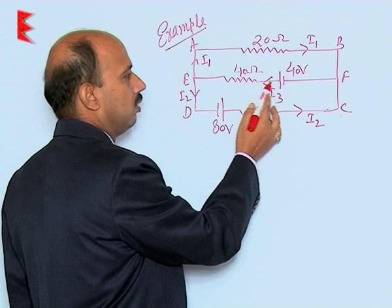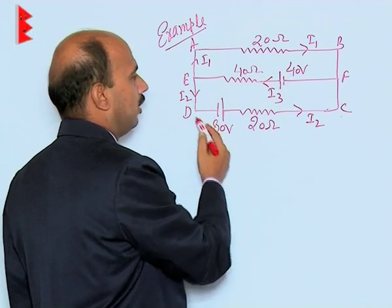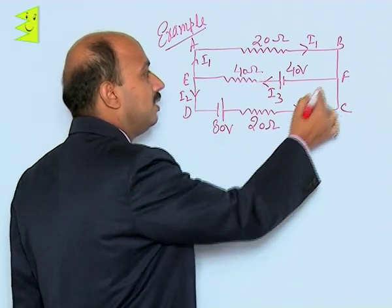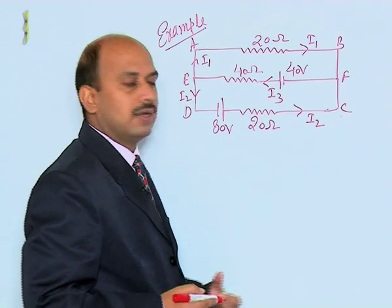I3 is coming from here from the 40 volt and going I1 this side and I2 this side. In this case we have to use Kirchhoff's law to calculate the current I1.